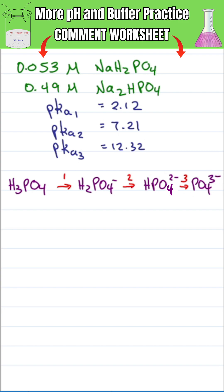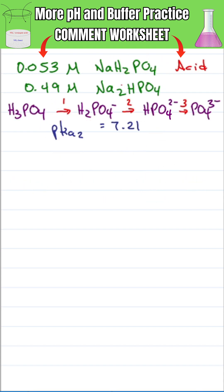This buffer uses NaH2PO4 and Na2HPO4. We have to use Ka2 where this is our acid and this one's our base. To find the buffer pH we'll use the Henderson-Hasselbalch equation.